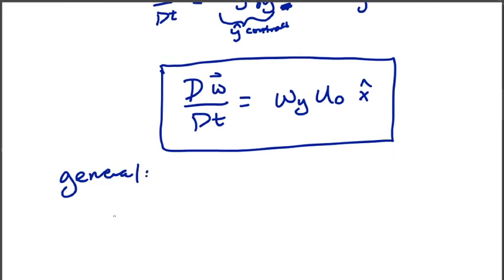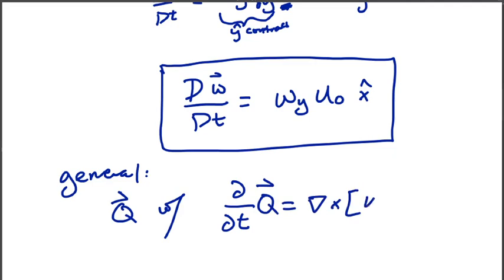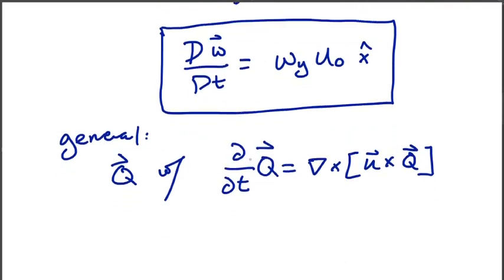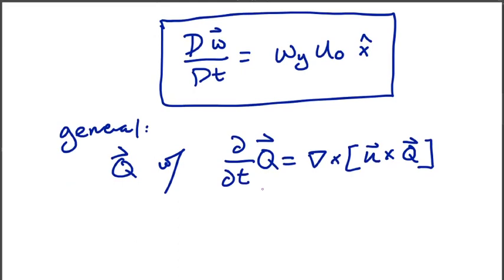For any vector q, with the evolution equation partial with respect to t of q is equal to del cross u vector cross the vector q. There's some very important properties of vectors that evolve according to these evolution equations, and these vectors themselves are very important in the natural world as vorticity evolves following this equation, and so does the magnetic field in MHD.